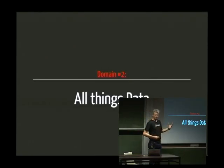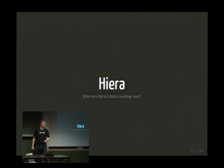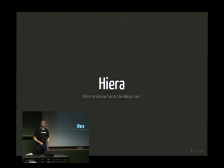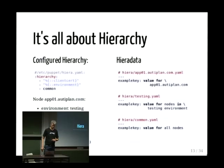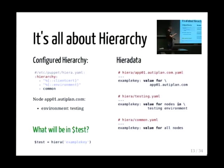Now let's talk about data — how we can extract data from our manifests using Hiera. Can I have a show of hands: who is using Puppet but not Hiera yet? That's quite a few — you're going to love this part because it's really powerful. Hiera is all about a hierarchy. It has a pretty simple configuration file where you can use any Facter fact to set up a hierarchy level.